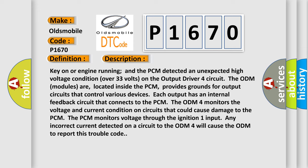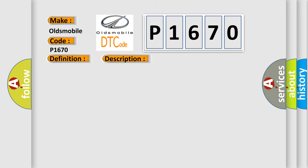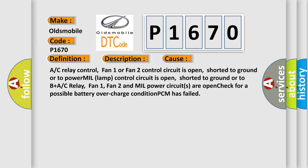This diagnostic error occurs most often in these cases: A/C relay control, Fan 1 or Fan 2 control circuit is open, shorted to ground or to power. MIL lamp control circuit is open, shorted to ground or to B+. A/C relay, Fan 1, Fan 2 and MIL power circuits are open. In addition, check for a possible battery overcharge condition or PCM failure.